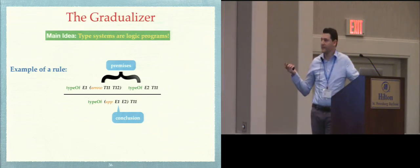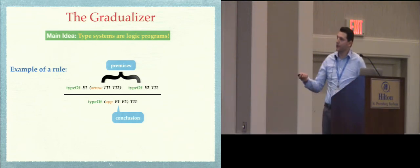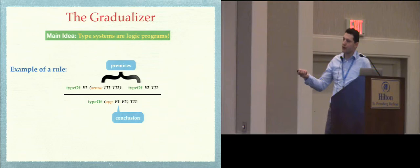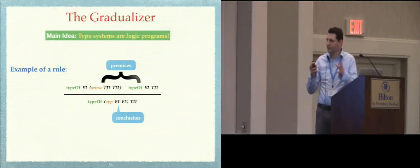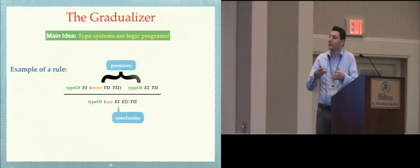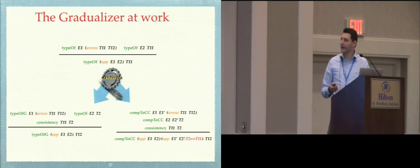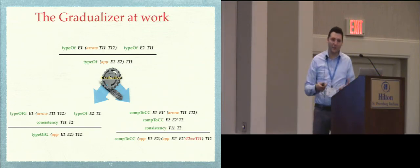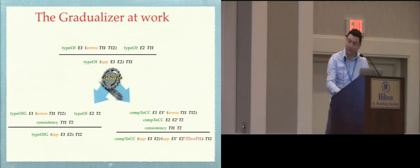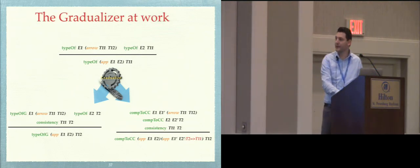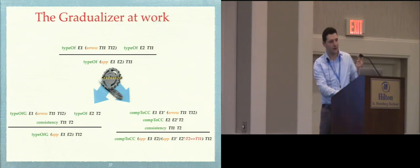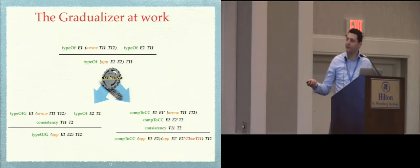The input type systems are simply logic programs. Here we have an example with the function application we've seen before. We use a predicate name rather than term style. If you're familiar with logic programming, this is basically a conjunction of formulae — below the line is an implication, which is an isomorphic representation. The Gradualizer simply takes a logic program, goes over the rules doing a lot of metaprogramming, and inspects and manipulates premises and conclusions to produce two logic programs: one defining the gradual type system, and one defining the compilation to the cast calculus.